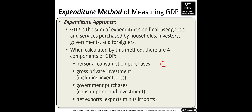Firm spending is called investment, and this investment also includes inventories. Government spending on goods and services is called government expenditure. Net exports represent exports — goods sold to foreign customers — minus imports, which are goods bought from foreign people. That is why it is called net exports.